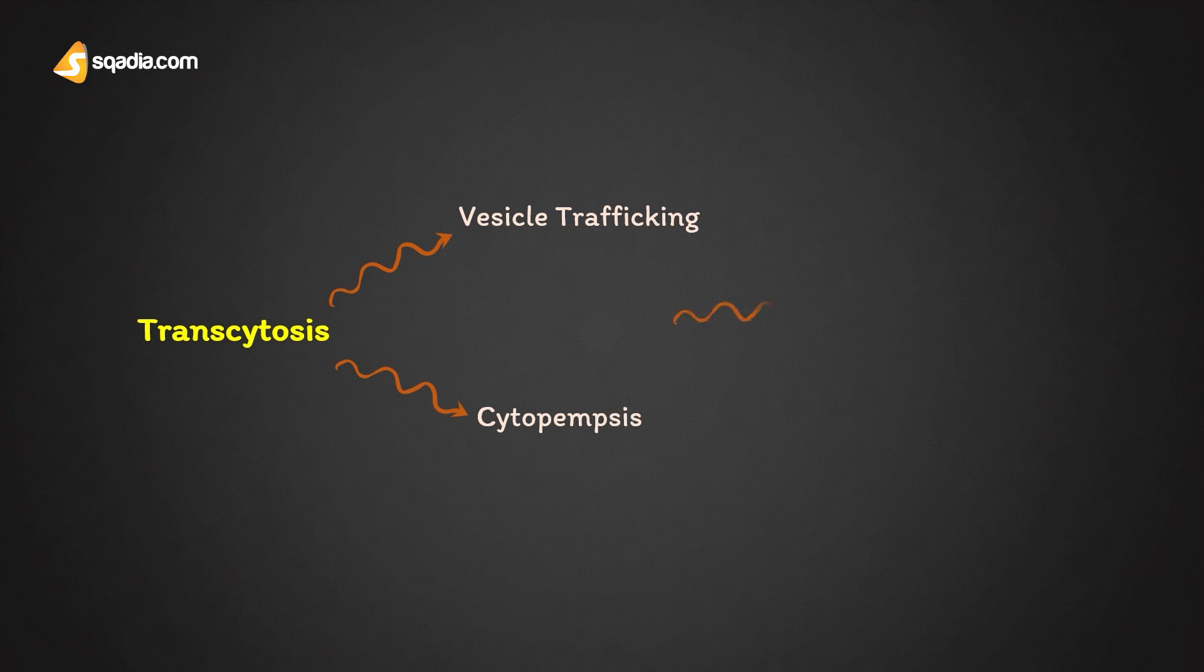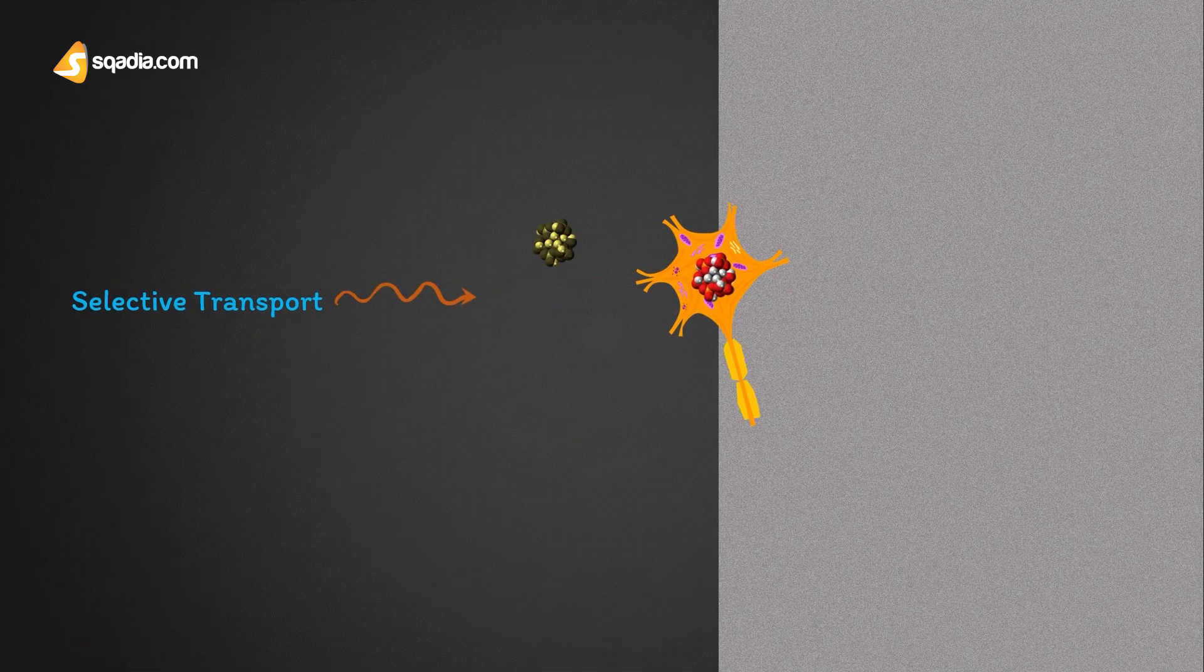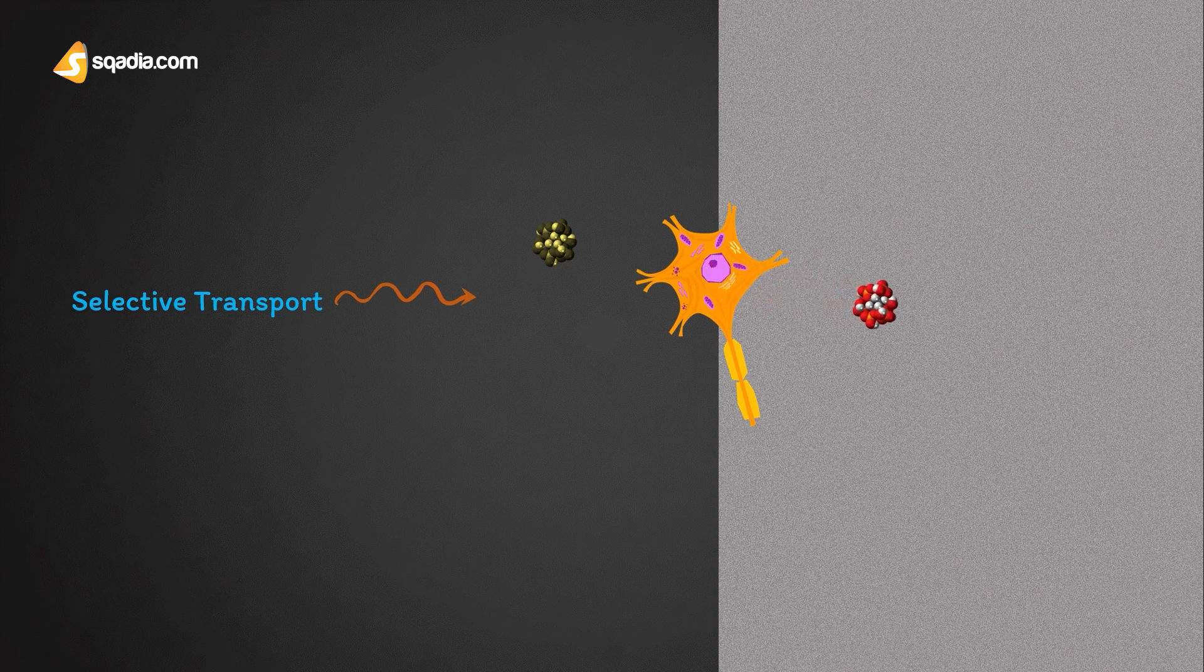Remember that transcytosis plays an important role in selectively transporting substances between two environments across the cell. This movement does not cause any distinct change in the composition of these environments.